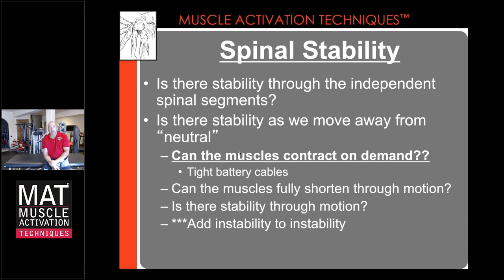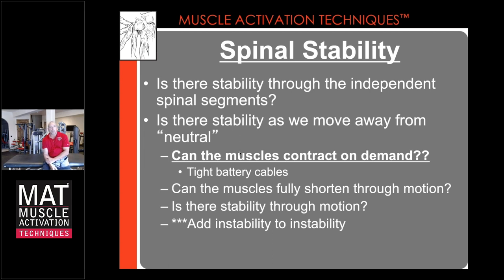Global stability means stability through motion as we move away from neutral. Are those segments being stabilized independently and in an integrated fashion as we move through motion? The biggest key is: can muscles contract and contract on demand? When you have inflammation, it alters that timing relationship where muscles can't contract on demand — again, like having loose battery cables. We need tight battery connections through each of the muscles that attach to the segments of the spine, and each muscle globally that moves the thorax and pelvis to create spinal motion.